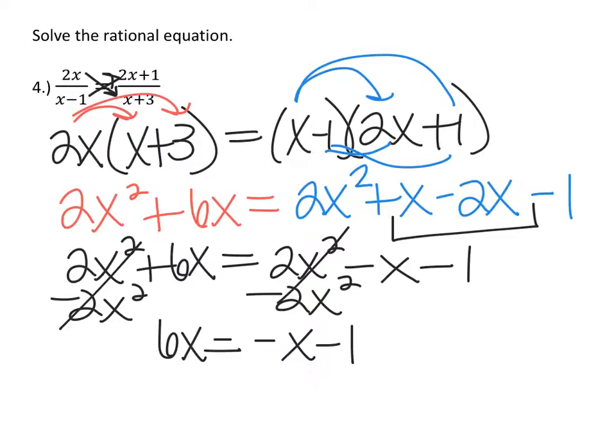Actually, in this case, I don't want to move everything to one side. Now that I just have x terms, I want to move my x's to one side and my constants to the other side. So let's add x on both sides. Then I have 7x equals negative 1.